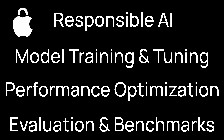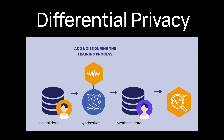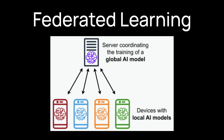Starting with responsible AI: Apple has prioritized creating foundation models that are ethically sound and respect user privacy. The models are trained using differential privacy techniques, which adds enough noise during data processing to ensure that individual data points cannot be traced back to specific users. Additionally, Apple's approach incorporates federated learning, allowing models to learn from decentralized data without compromising privacy. This methodology not only enhances data security, but also aligns with Apple's commitment to responsible AI deployment.